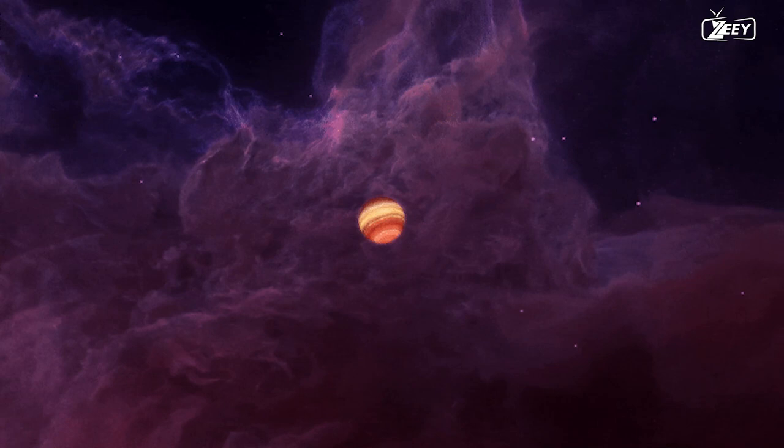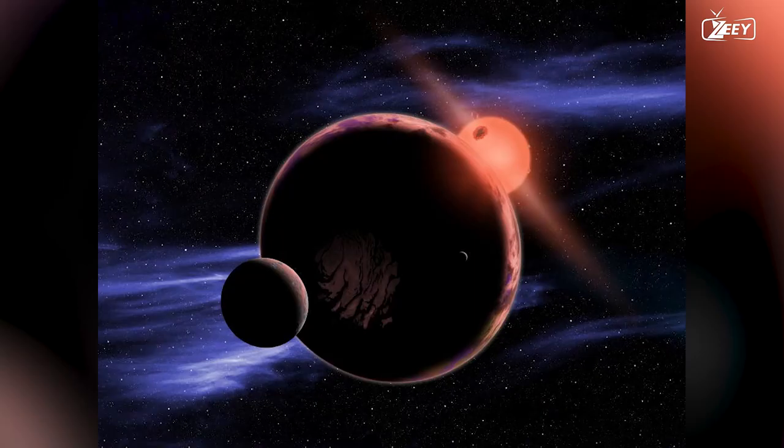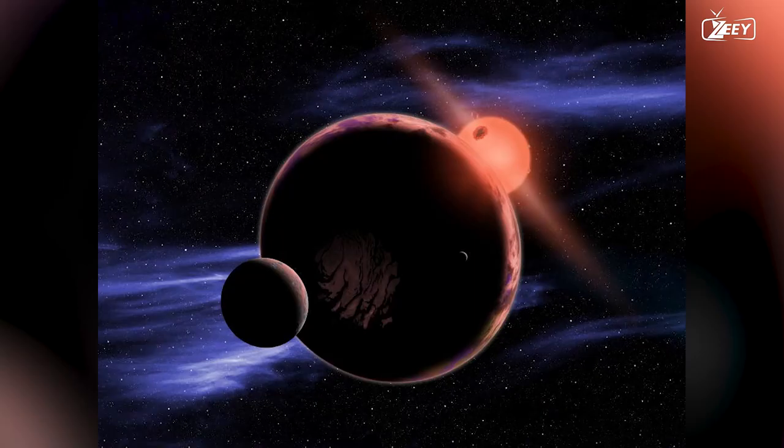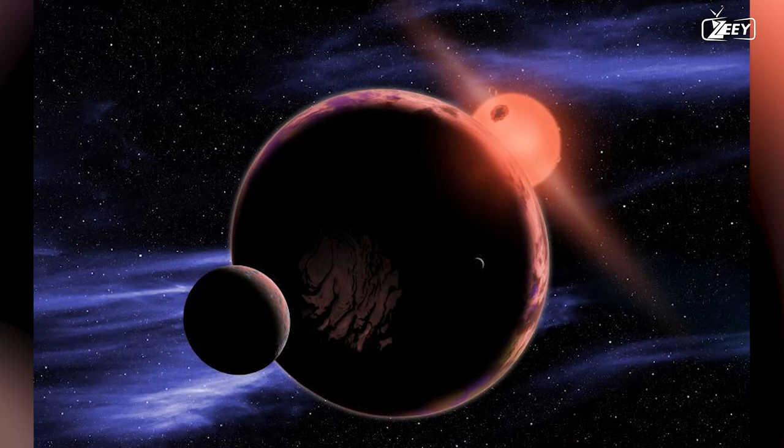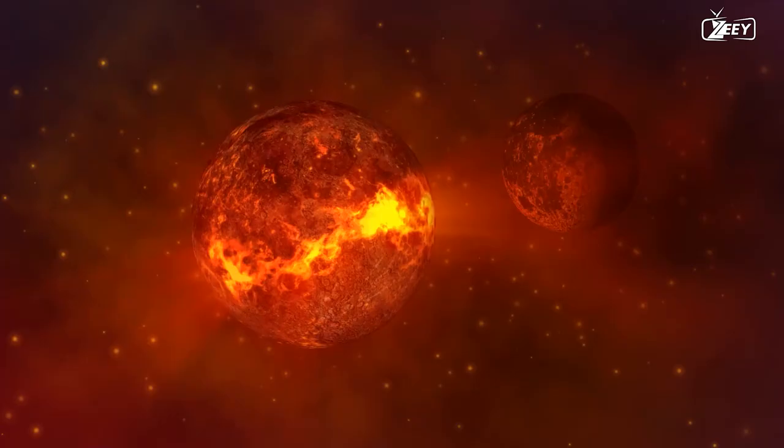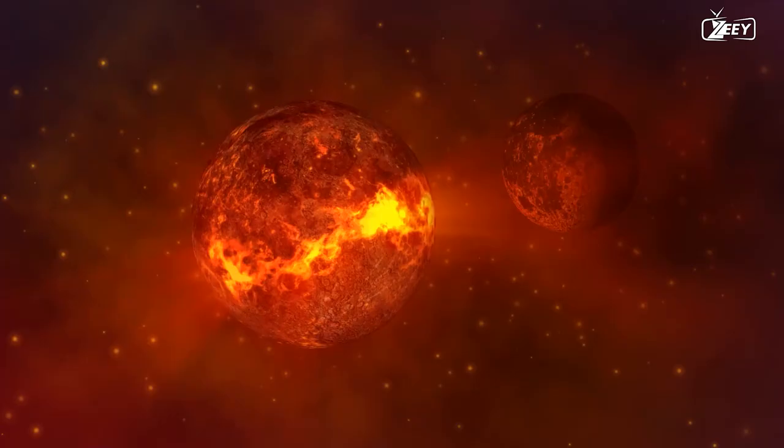It orbits its host star at a distance of 0.08 astronomical units, which is significantly closer than Mercury's orbit around the sun. Glees 710b is classified as a hot Jupiter due to its close proximity to its host star, which causes it to have a very high surface temperature.